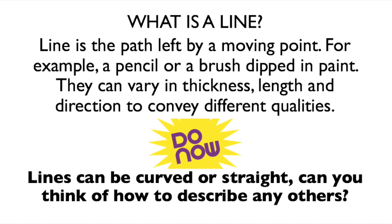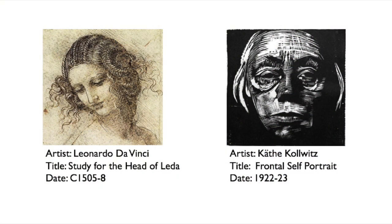Can you think of how to describe any others? You might have said scribbled, dashed, or looped. Whenever we start a drawing, we tend to use line to show what we're doing. To draw a face we might outline the face, add in the eyes, nose, mouth, and hair, and most of that is usually done with a line.